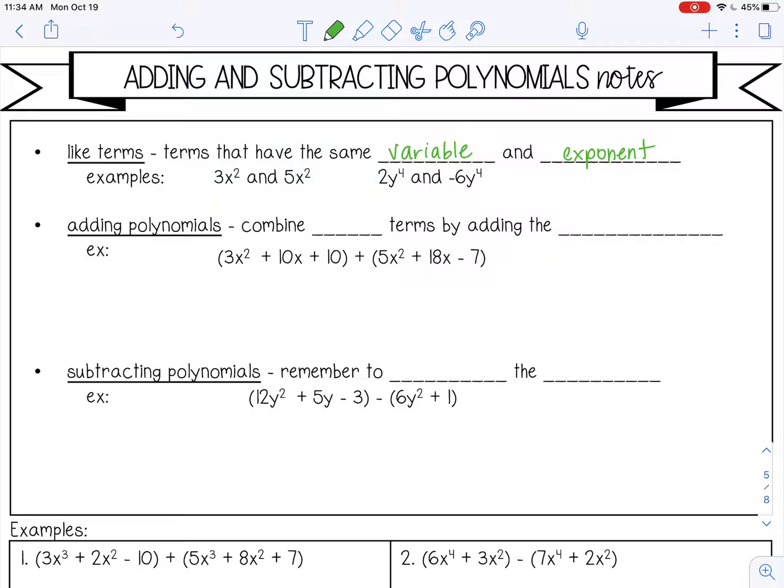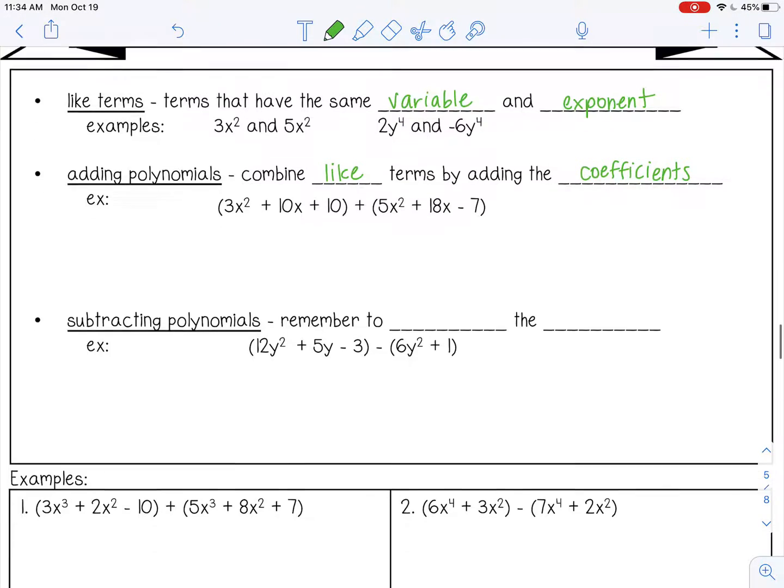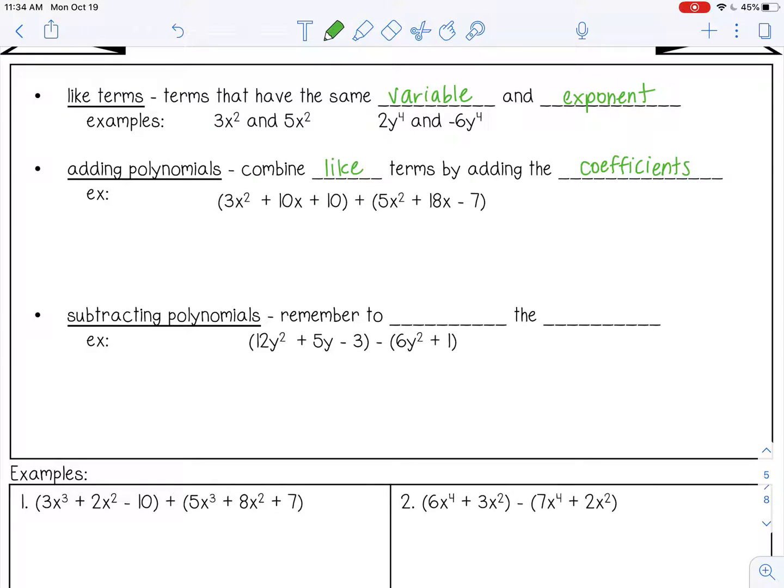For adding polynomials, you can combine like terms by adding the coefficients. So if I wanted to add these two polynomials together, I want to find like terms and I want to add their coefficients. So 3x squared and 5x squared, those are like terms because they both have x squared. So I'm going to add 3 and 5, which gives me 8. So 8x squared.